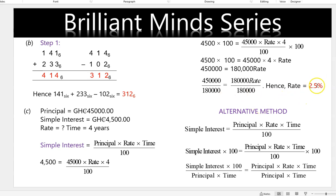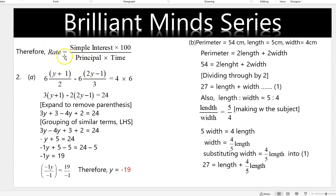Hence the final answer is 2.5%. Alternatively, we can use the simple interest formula and use change of subject to arrive at the rate, making rate the subject of the relation. Finally, rate equals simple interest times 100, divided by principal times time.